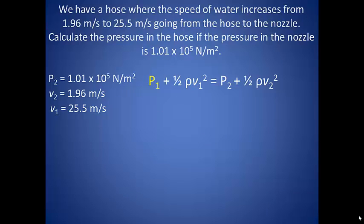Suppose we have a hose where the speed of water increases from 1.96 meters per second to 25.5 meters per second going from the hose to the nozzle. Calculate the pressure in the hose if the pressure in the nozzle is 1.01 times 10 to the fifth newtons per meter squared.